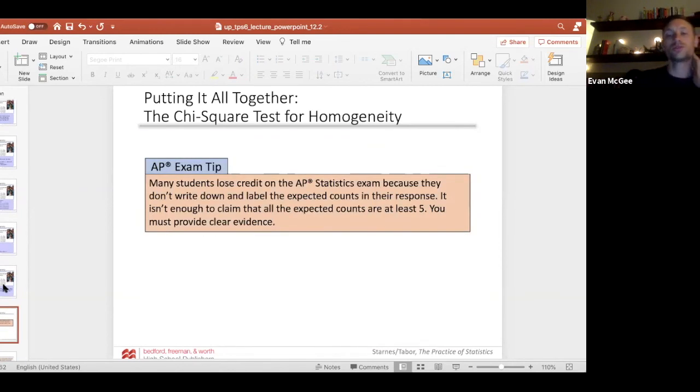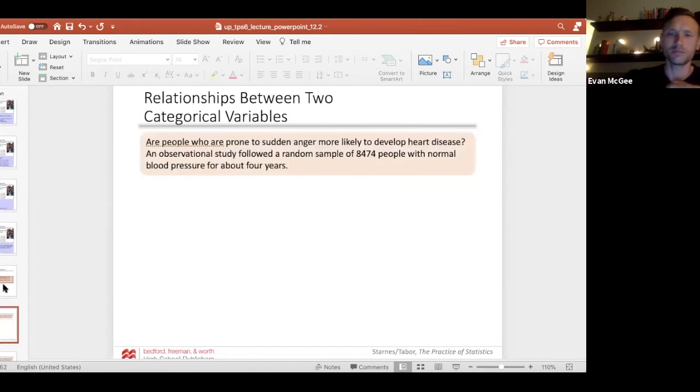So many students lose credit because they don't write down and label the expected counts in the response. That's why I was emphasizing you really need to make sure you've shown that all the expected counts are greater than or equal to five.